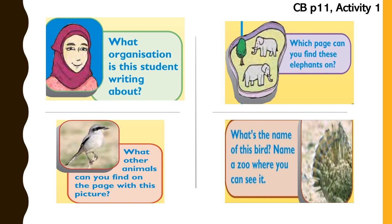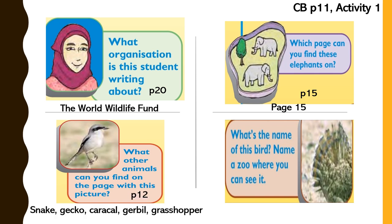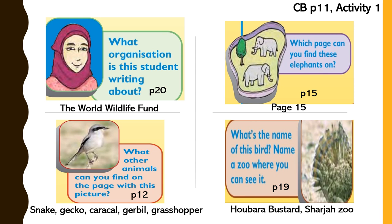Check the answers. Question 1 is on page 20 — the name of the organization is the World Wildlife Fund. Question 2 is on page 15. Question 3 is on page 12 — the names of the other animals are snake, gecko, and grasshopper. Question 4 is on page 19 — the name of this bird is the Hoopoe Bustard, and it is found in Sharjah Zoo.